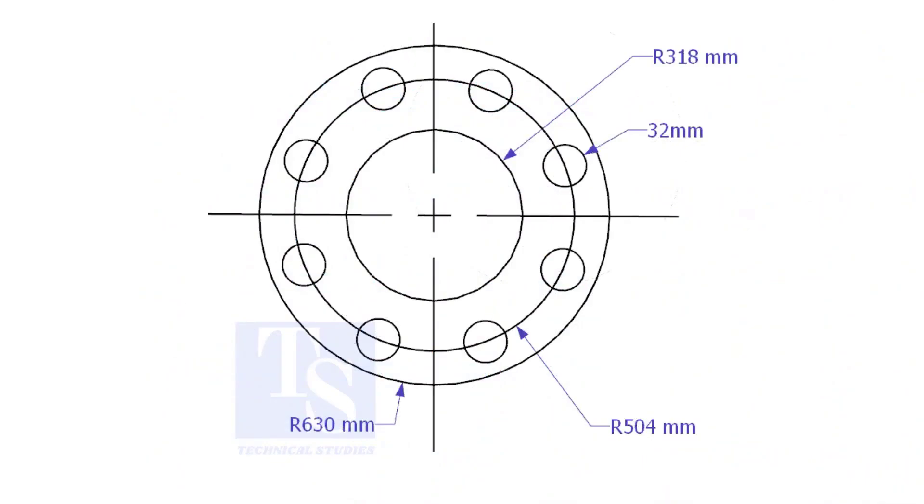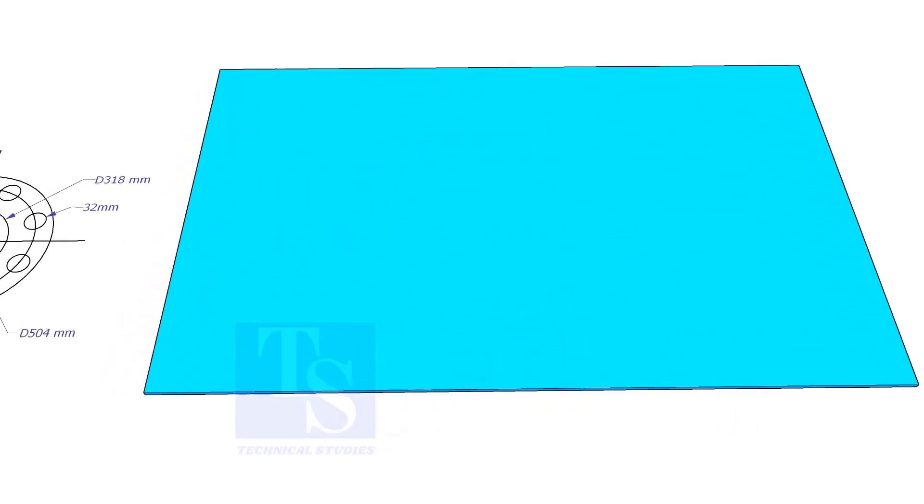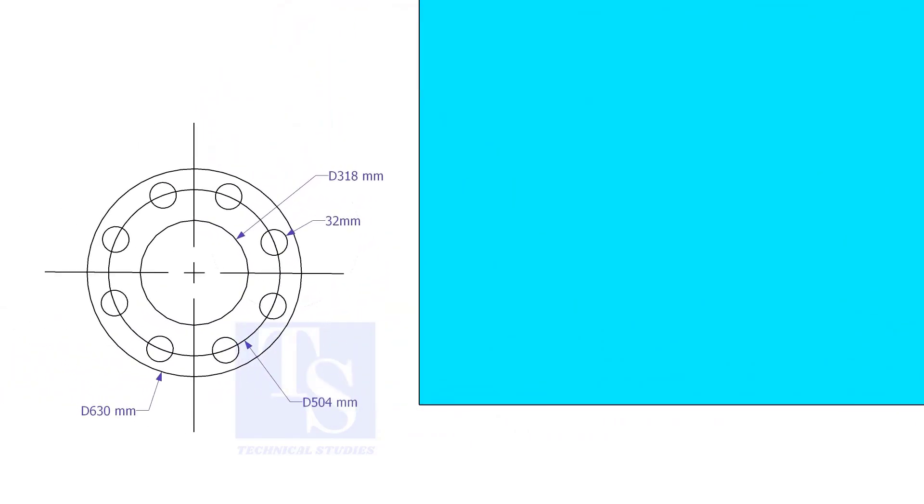Let us mark this flange. Draw a line 10 millimeters more than the half OD of the flange from the edge of the plate.